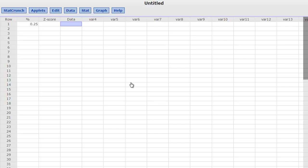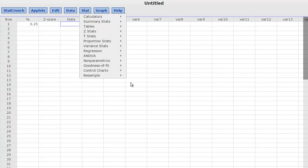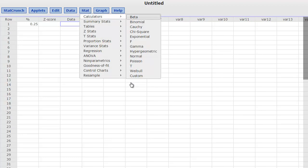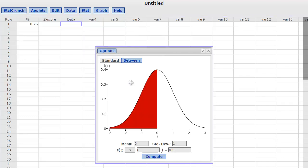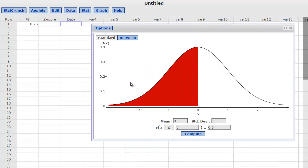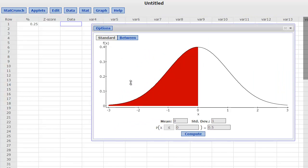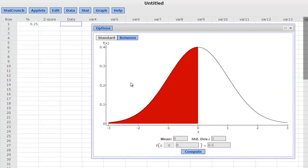Well, it turns out that if you tap on the stat button, there are calculators here, and one of the calculators is the normal calculator. I love this calculator because it has a great visualization tool that goes with it. And you'll notice it has a place for the mean, a place for the standard deviation, a place for the data value, and a place for the probability.